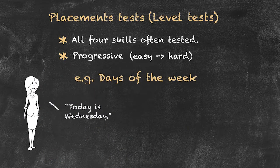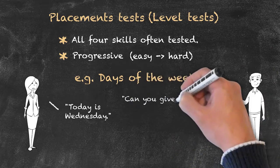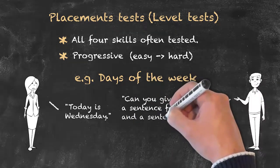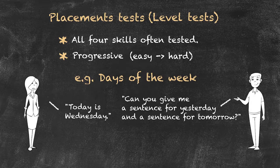We can then raise the level of the question and say: if today is Wednesday, can you give me a sentence for yesterday and a sentence for tomorrow? Then we will hopefully be using the past form of 'is' and the future form to find out whether the student is at the next level. Once we've done that, we could perhaps check a further grammar point.